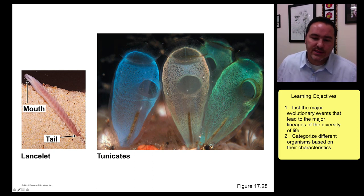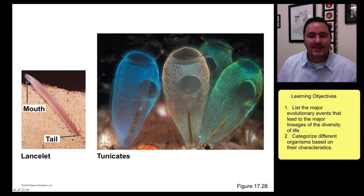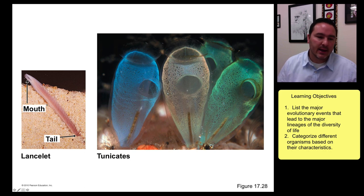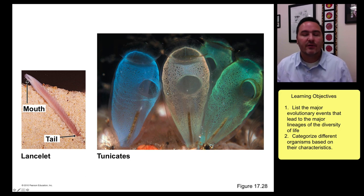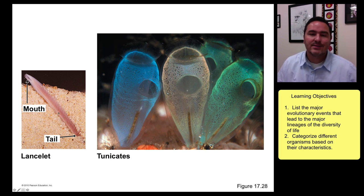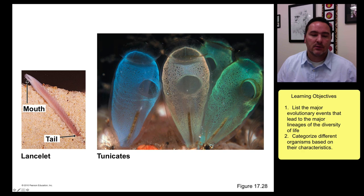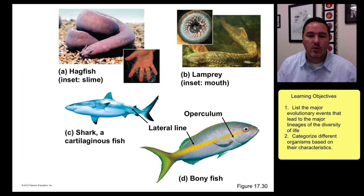The tunicates, or sea squirts, in their adult form are filter feeders with an incurrent and excurrent opening. But as larvae, they are free-swimming and look a lot like lancelets — they had an ancestral notochord that degrades away in the adult. The descendants of the tunicate form probably went through a pedomorphic event, where the organism became sexually mature while still in the juvenile body form, which looked like a small swimming eel-like fish — and that led to further chordate evolution.